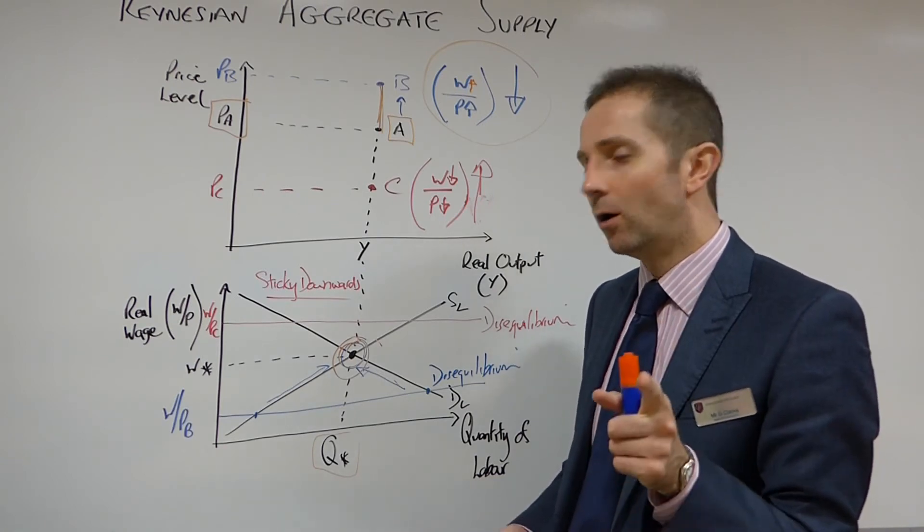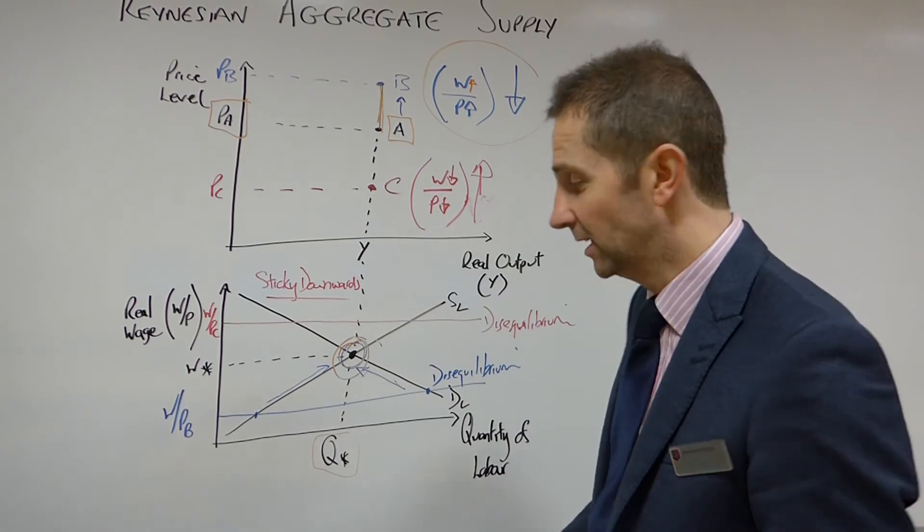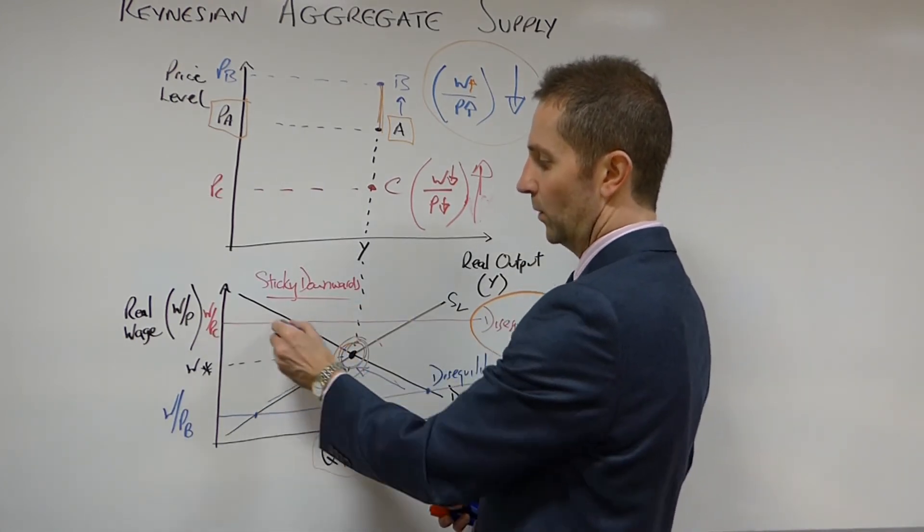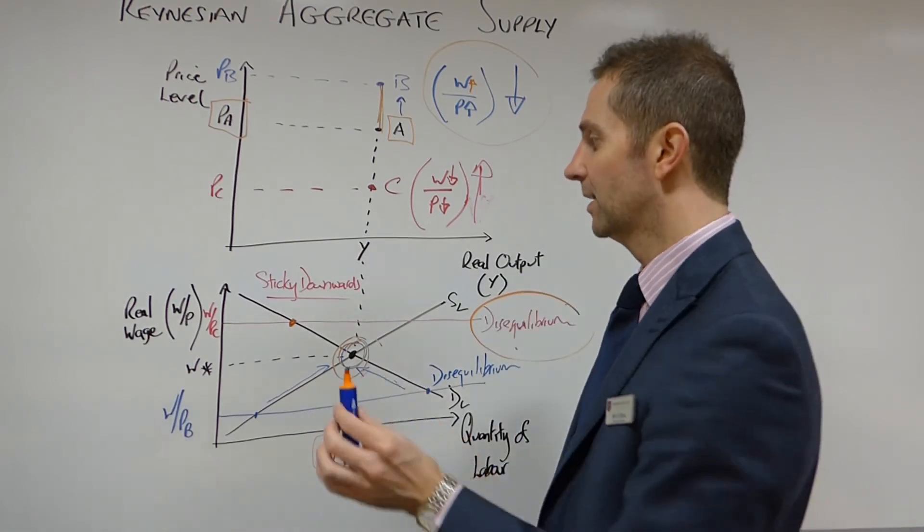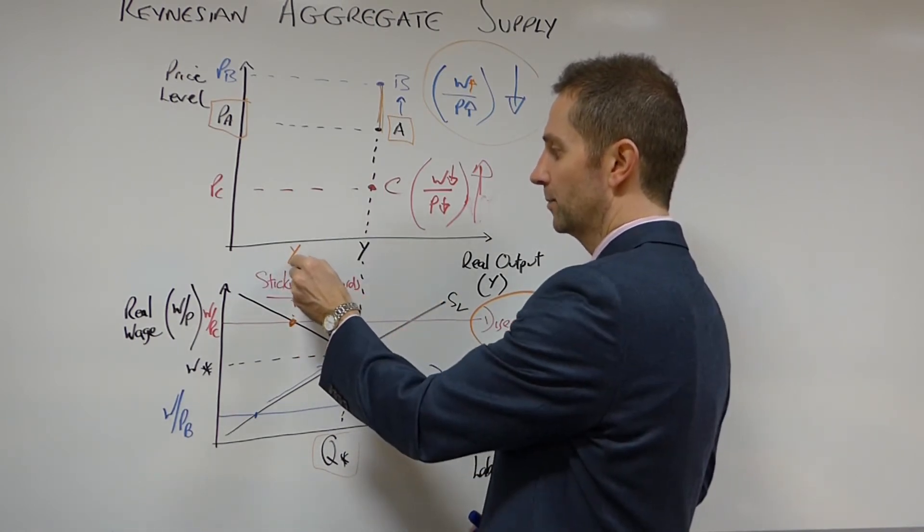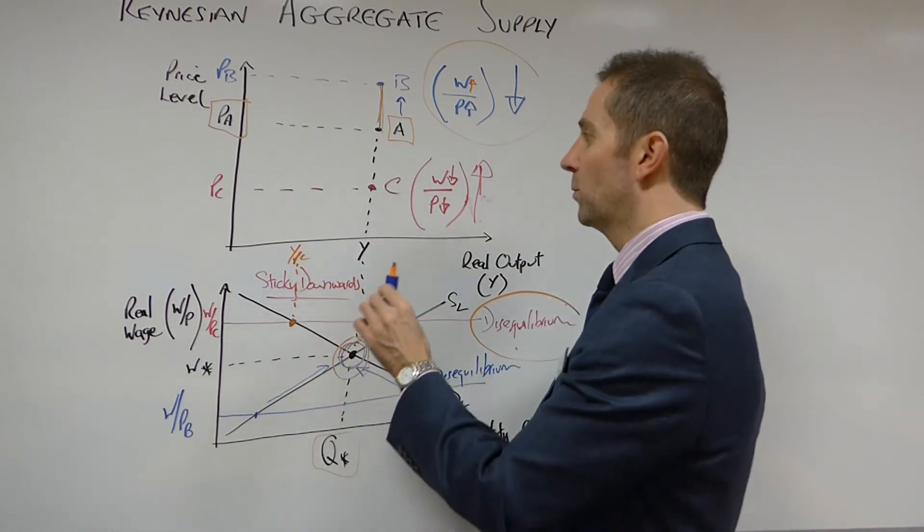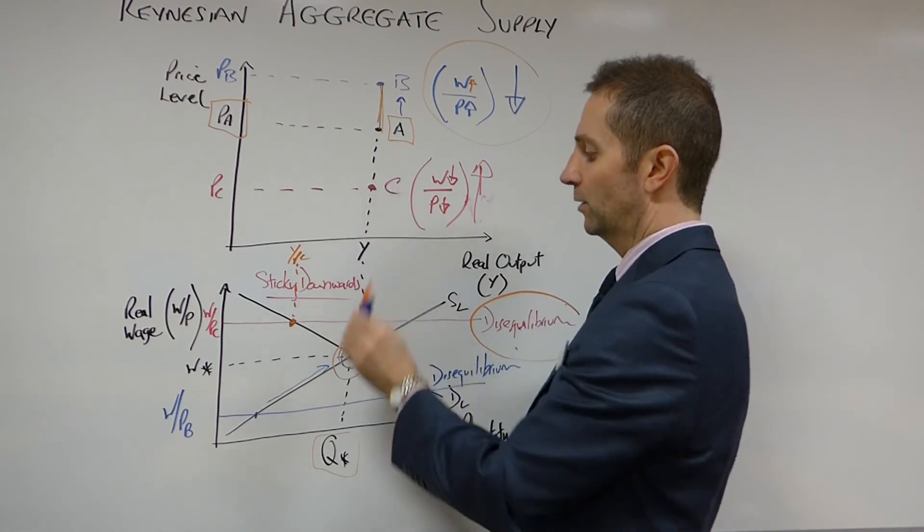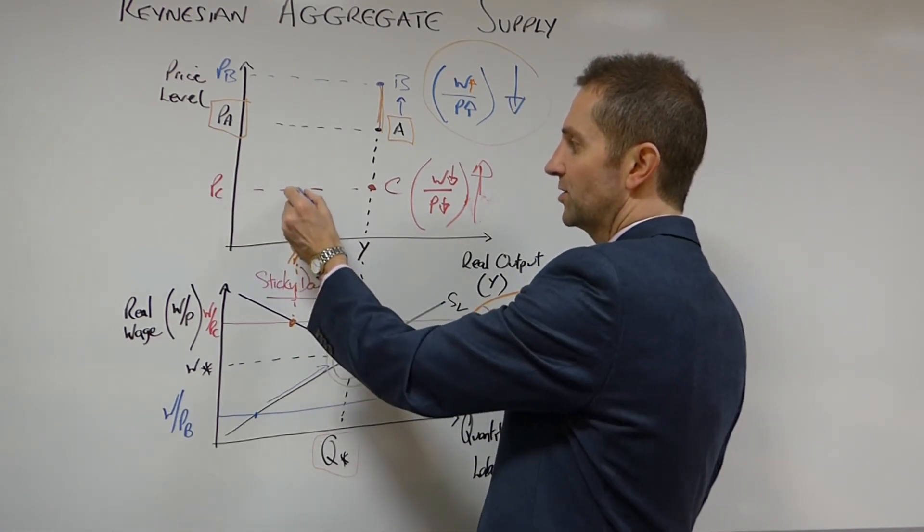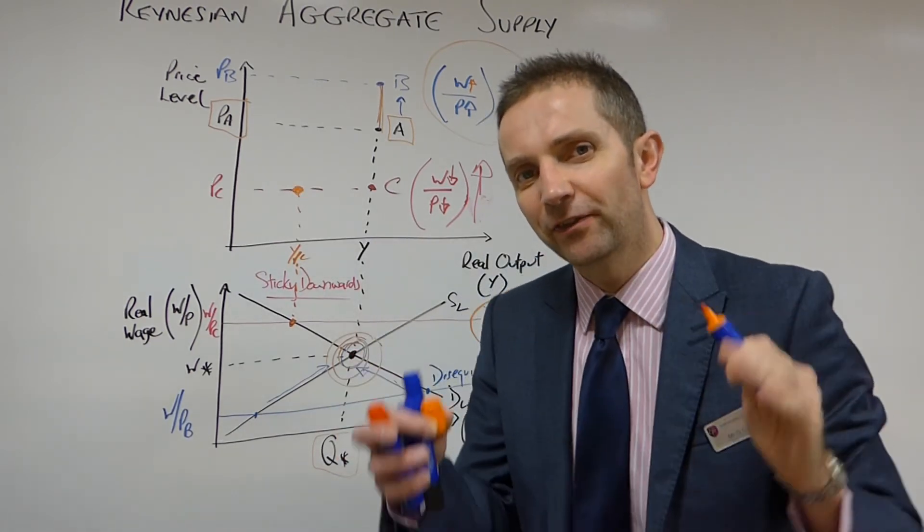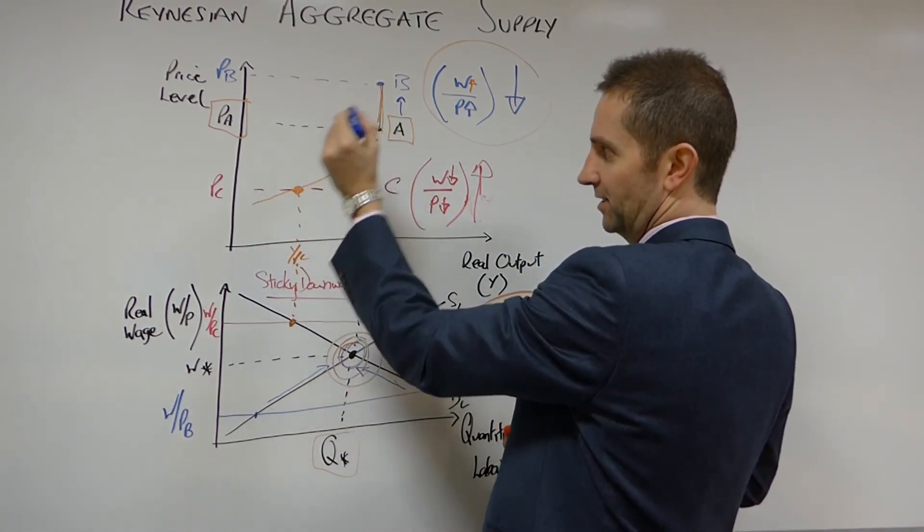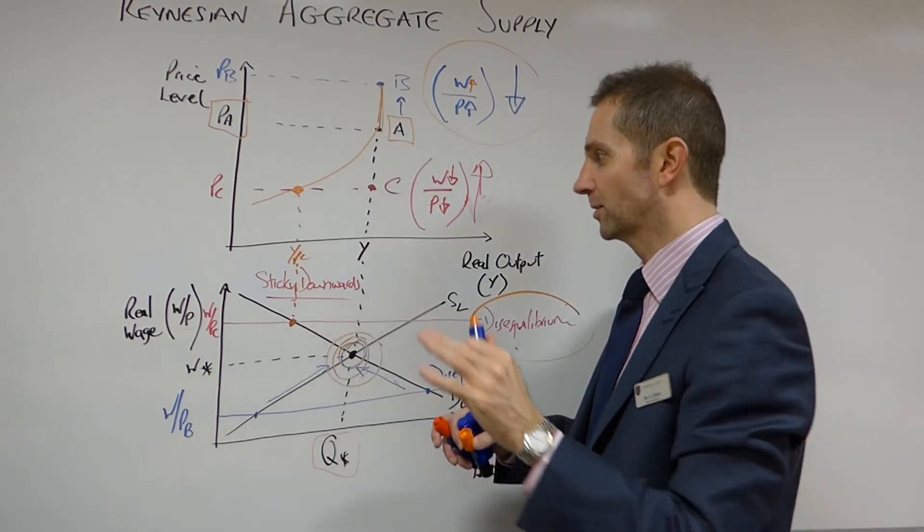Now, that creates a problem because this point of disequilibrium, if wages are sticky downwards, will then persist. And so the demand for labour at this wage would obviously be here. Now, if the demand for labour is there, the level of output which is consistent with that level of labour would obviously be here, Y at the price of C. So actually what would happen is rather than equilibrium moving in the labour market and adjusting back to here, the equilibrium level at a price of PC will get stuck somewhere around here because of this inflexibility in the labour market. And so, this is the reason why the Keynesian aggregate supply curve has this kink in it because of this inflexibility in the labour market.